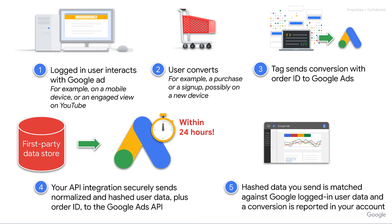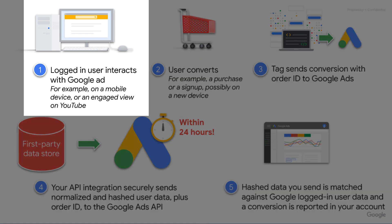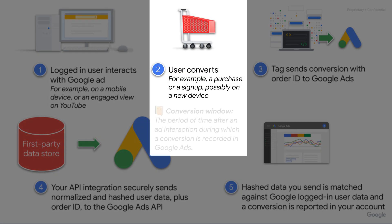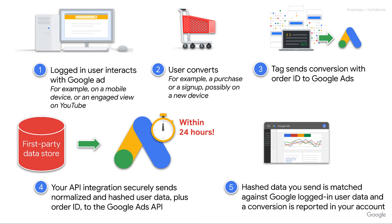Let's see how this happens in practice. Let's say I operate an online store and I run Google Ads to drive purchases. I've set up a tag on my website that sends a conversion to Google Ads whenever someone converts — in this case by making a purchase. One of my customers, Nancy, views my ad on YouTube while signed in. Sometime later within my conversion window, she makes a purchase on my site, and as part of the purchase flow, I collect information attributing the purchase to Nancy. At the same time, the tag sends conversion information and an order ID to Google Ads.